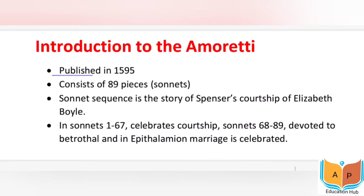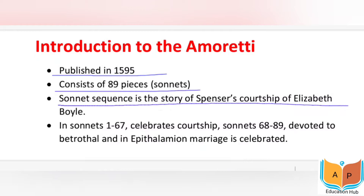Amoretti was published in 1595 — that is, four years before Spencer's death. It consists of 89 sonnets in total. The literary meaning of 'Amoretti' is 'little love.' The sonnet sequence tells the story of Spencer's courtship of Elizabeth Boyle.